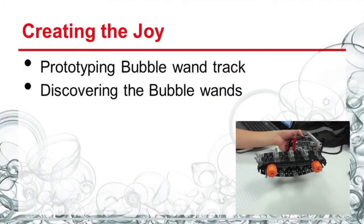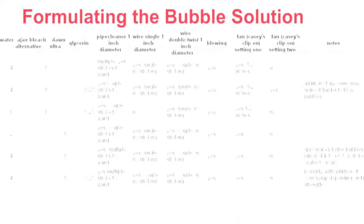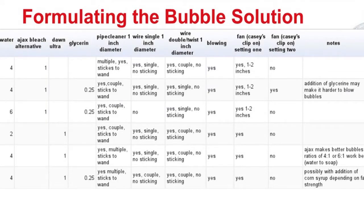After drawing our first prototype, we came to build this prototype, pictured here in the bottom right. With this prototype we went on to build bubble wands out of pipe cleaners. Next came the bubble solution, in which we changed independent variables such as water, type of dish detergent, and the amount of glycerin if any. The solution in row number two was our final for the rest of the project.